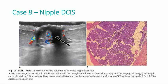In the category of nipple malignancies, we have a case of nipple ductal carcinoma in situ. The patient presented with bloody nipple discharge. The ultrasound shows an irregular hypoechoic mass with indistinct margins and internal vascularity. After surgery, histology reveals a papillary lesion inside the dilated duct with areas of malignant transformation: a ductal carcinoma in situ, grade 2.